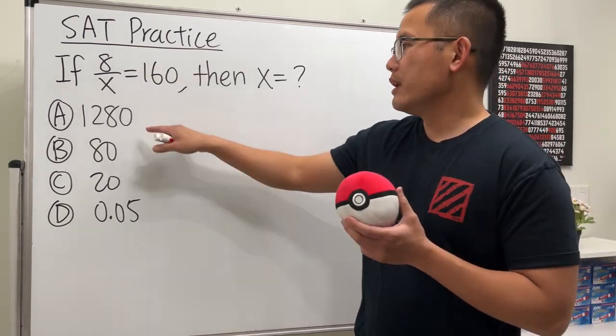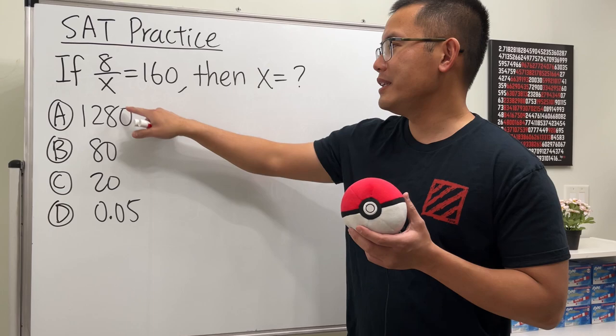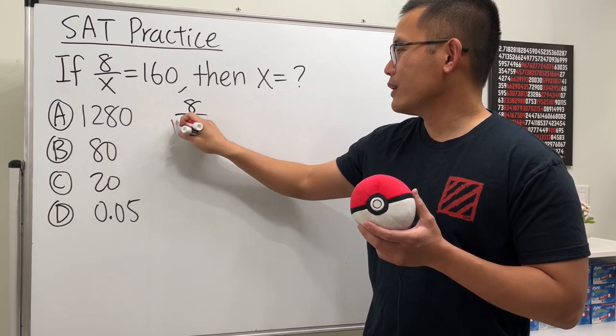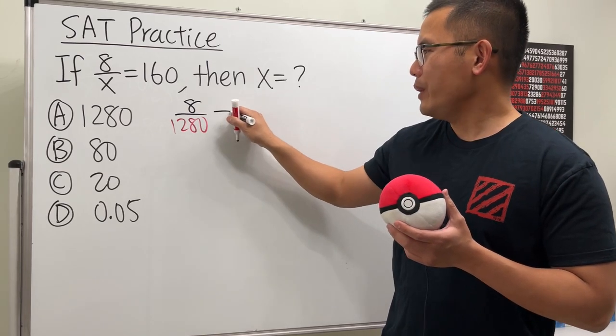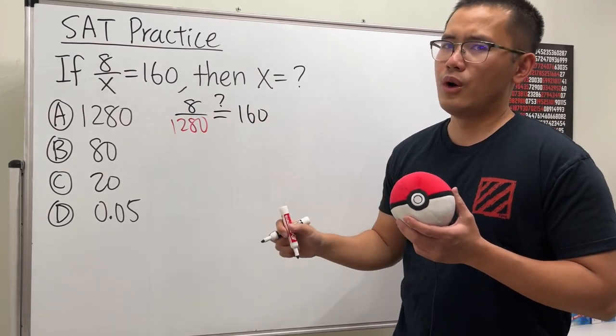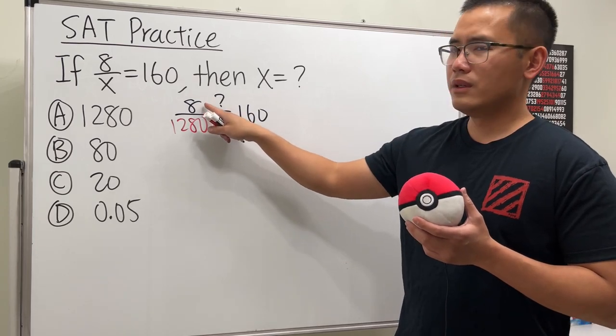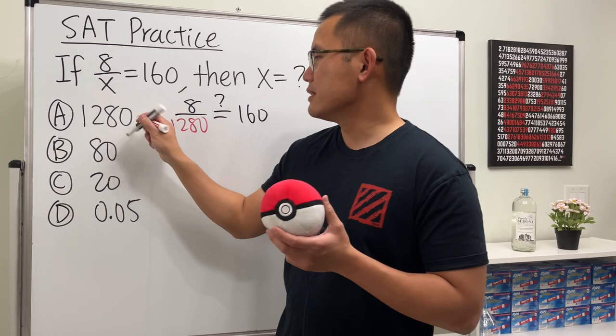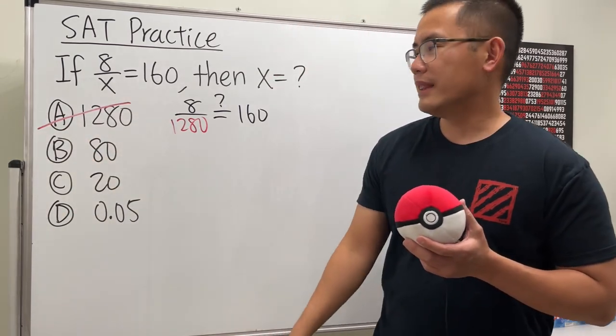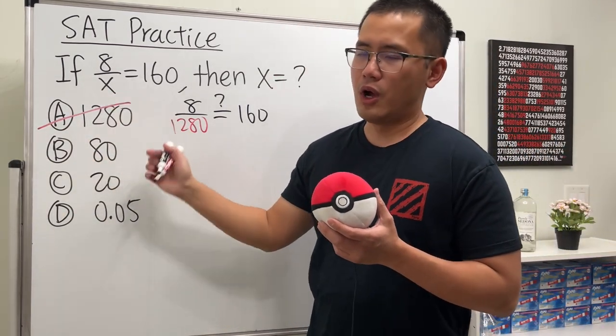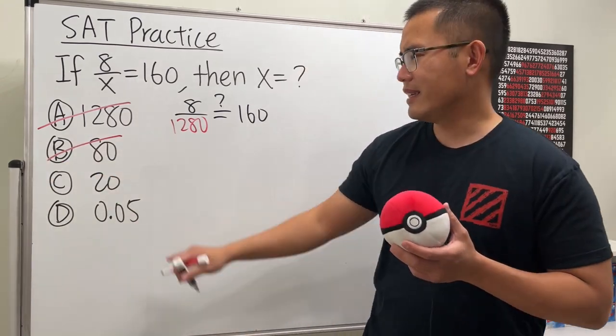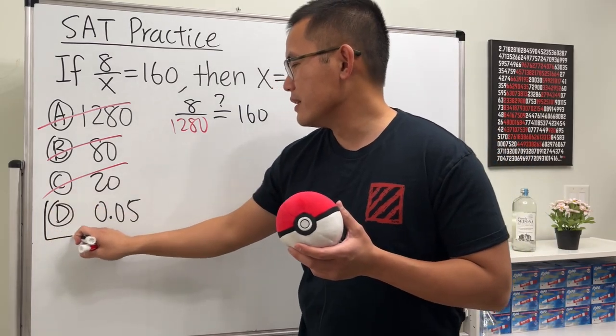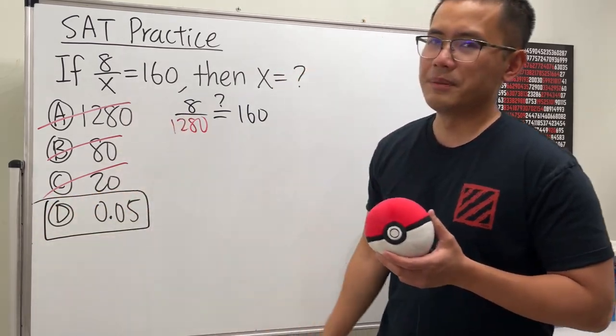So let me show you. If you put 1280 back here, we are talking about 8 over 1280. Are we really going to get 160? No, impossible. 8 divided by this number, not possible. So this is definitely not the answer. And likewise, if you put 80 here, no. 8 over 80 is 0.1, and then 20, same thing. So you know the answer has to be D by process of elimination, and then we are done.